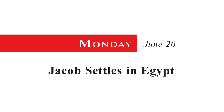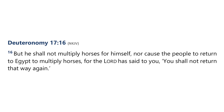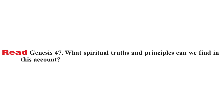Monday, June 20: Jacob settles in Egypt. It's very interesting how, despite all that Jacob had been told about Joseph being alive in Egypt, the Lord still gave him visions in the night and commanded him to leave. Jacob leaves the land of promise for Egypt, which later becomes associated with the one place God's people do not want to go, as we read in Deuteronomy 17:16: 'But he shall not multiply horses for himself, nor cause the people to return to Egypt to multiply horses. For the Lord has said to you, you shall not return that way again.' Read Genesis chapter 47. What spiritual truths and principles can we find in this account?